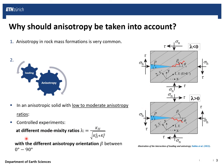To observe this interaction between these two parameters, we designed a set of controlled experiments to observe this interplay. We had different mode mixity ratios lambda, and at each loading ratio we also had different anisotropy orientations beta, which varies between 0 to 90 degrees.